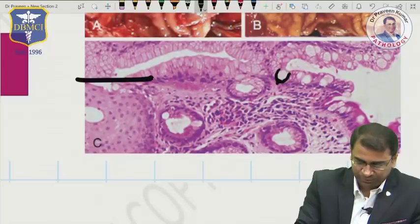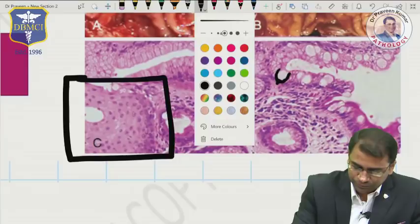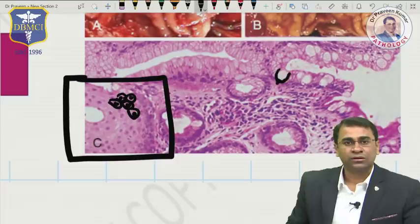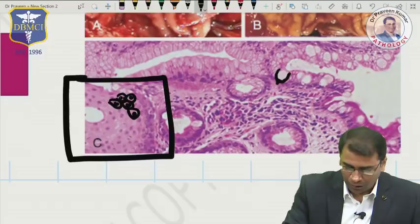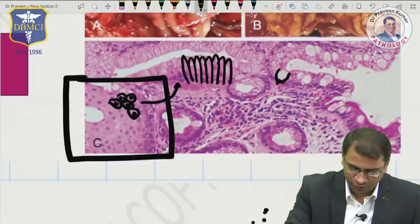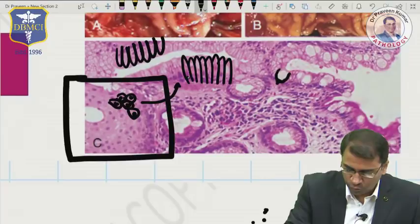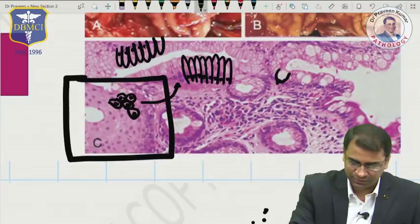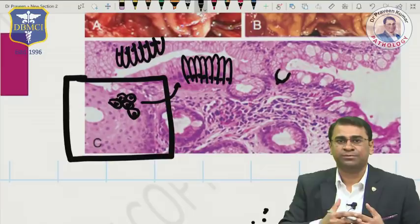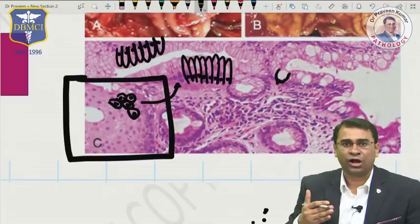Look at the epithelium. This part of the epithelium has flattened epithelial cells with a very prominent appearing nucleus — that is squamous epithelium. This is changing to an epithelium where the nucleus is all towards the base. Because the squamous epithelium has changed to columnar, this is basically a columnar metaplasia.